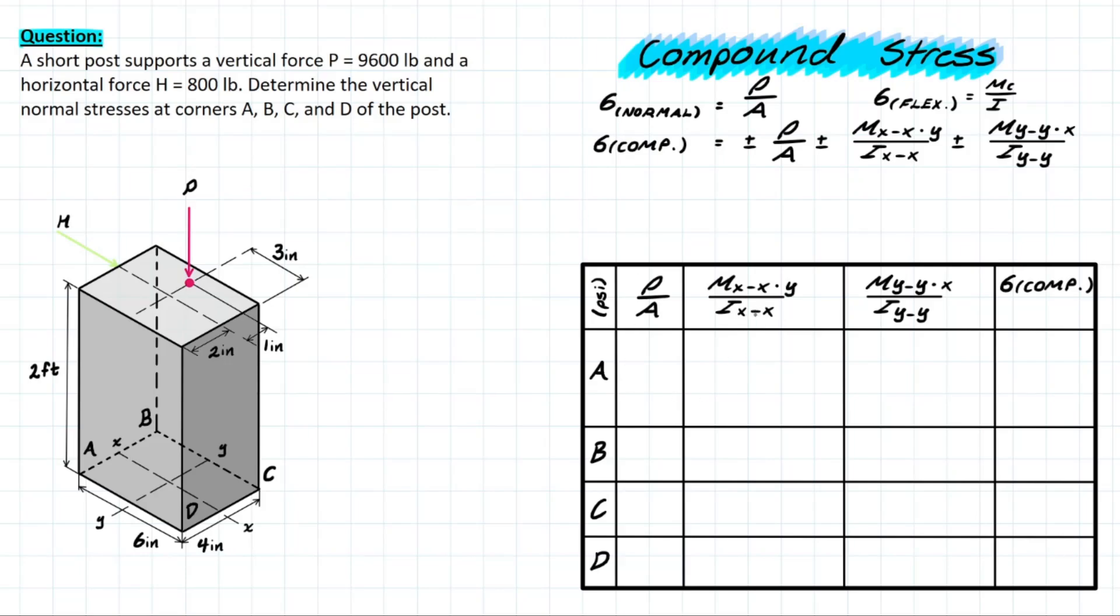So the first thing that we need to do is simply solve for these inertia values so we can use them in the flexure formula. So the first one we can do is Ixx and that is simply going to be the base with respect to x and then the height with respect to x as well. And that's following our same formula as we always use for these rectangle shapes.